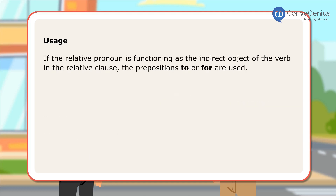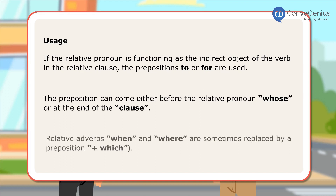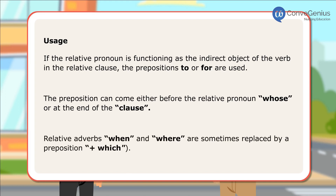If the relative pronoun is functioning as the indirect object of the verb in the relative clause, the prepositions to and for are used. The preposition can come either before the relative pronoun or at the end of the clause. Relative adverbs when and where are sometimes replaced by a preposition plus which.